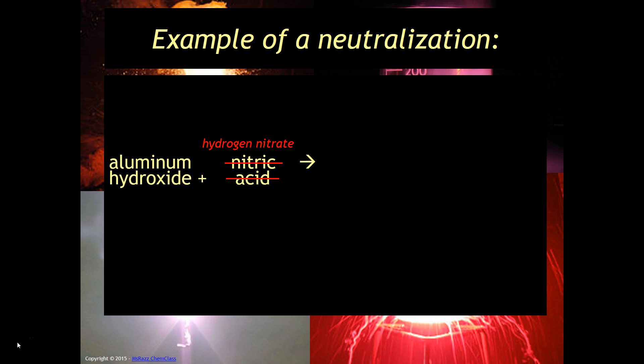So aluminum is going to bump out the hydrogen and the hydrogen is going to combine with the hydroxide. So you're going to get aluminum nitrate plus hydrogen hydroxide which, if you recall, water is hydrogen hydroxide. In neutralization reactions water is always going to be a product.